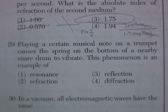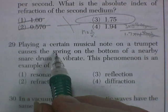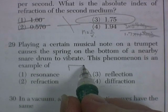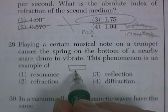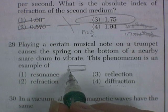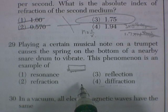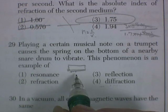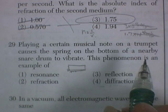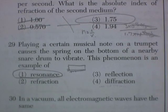29. Playing a certain musical note on a trumpet causes the springs in the bottom of a nearby snare drum to vibrate. That's why snare drums have little snares on them. There's a little release mechanism. So there's a set of springs underneath them. And you release that and they don't make contact. But, if you leave it connected, it will resonate, which is what they're talking about here. Resonance. 29, resonance.